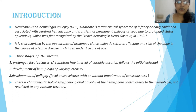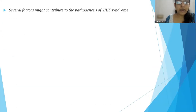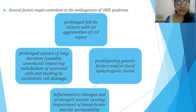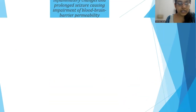There is characteristic holo-hemispheric global atrophy of the hemisphere contralateral to the hemiplegia, not restricted to any vascular territory. HHE syndrome has been linked with prolonged febrile seizures; however, the exact mechanism is still unclear. Several factors for pathogenesis have been proposed, which include prolonged febrile seizures with accumulation of cell injury, predisposing genetic factors, focal epileptogenic lesions, inflammatory changes, and prolonged seizures causing impairment of the blood-brain barrier, impairing metabolism of neurological cells leading to excitotoxic cell injury.